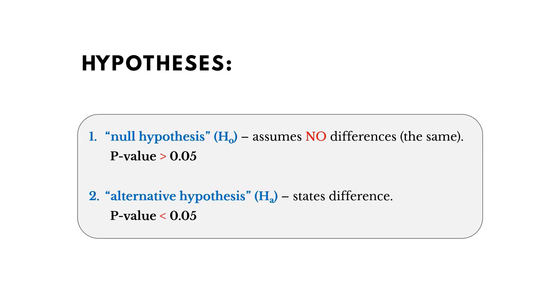The alternative of that is we see that there is a difference. The sample and the population are different from each other, or the two samples are different from each other. And in those cases, the p-value is going to be less than 0.05.